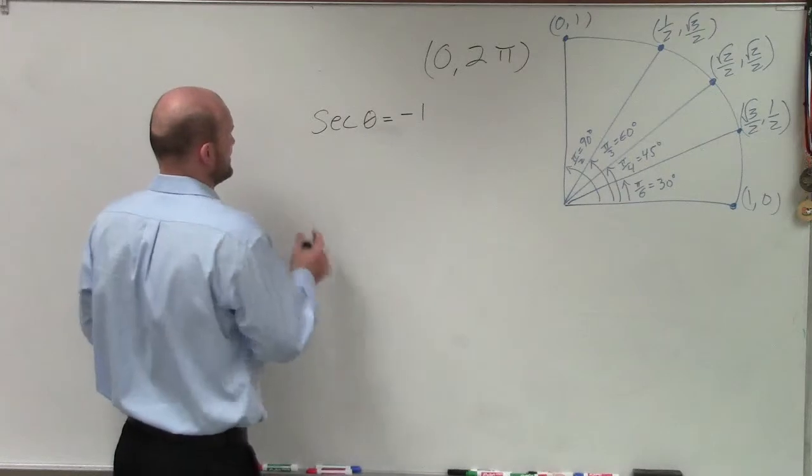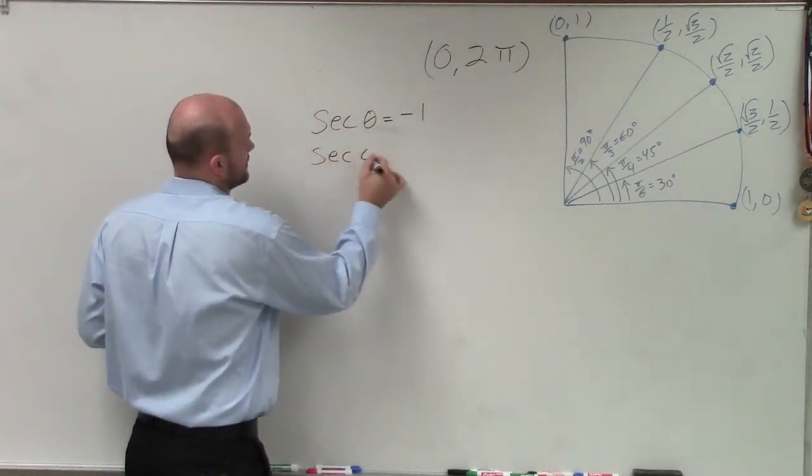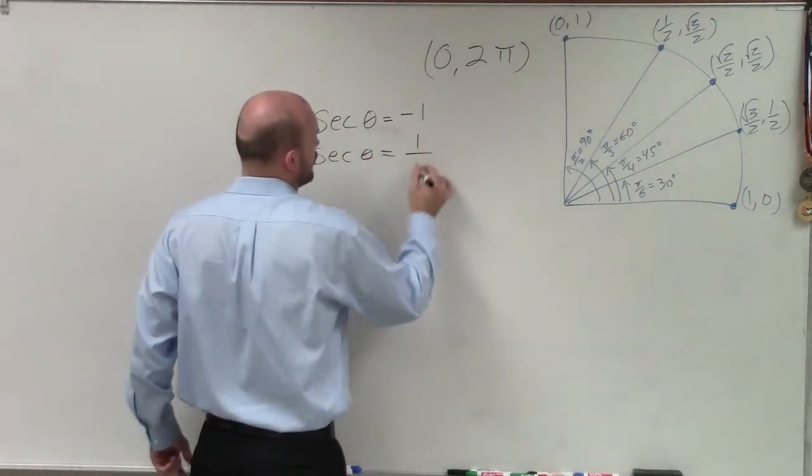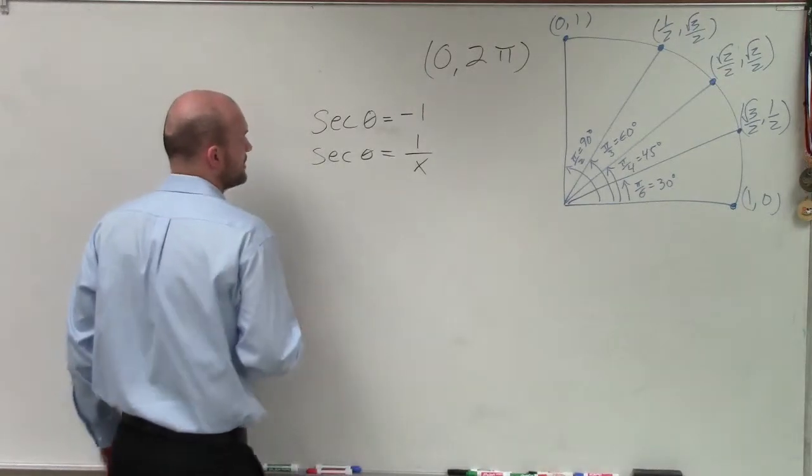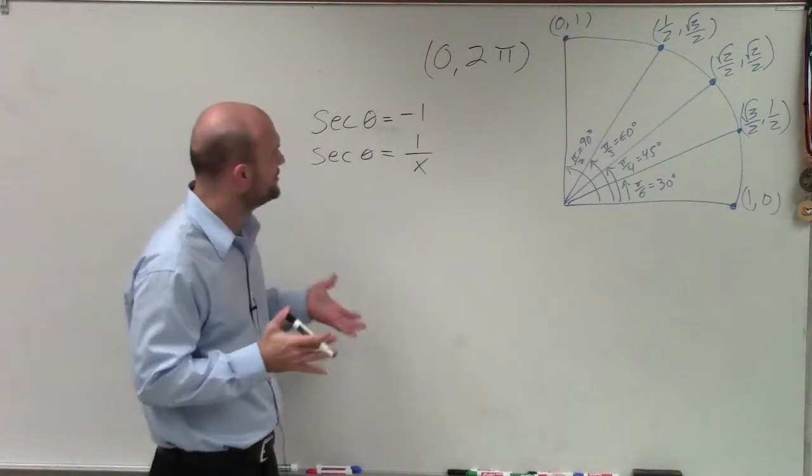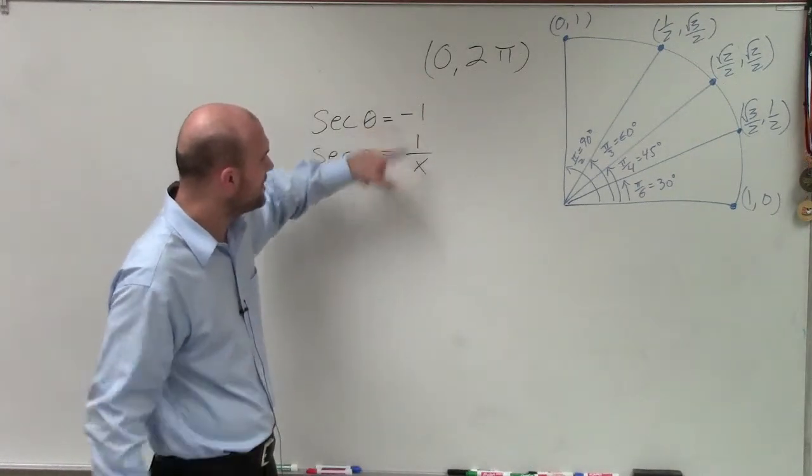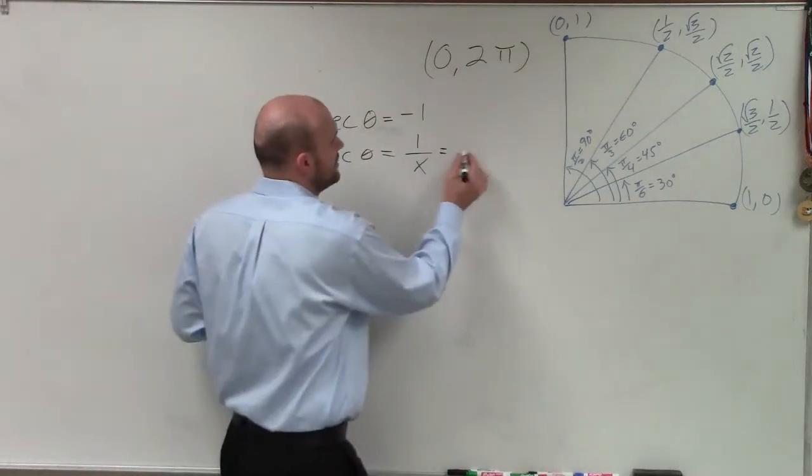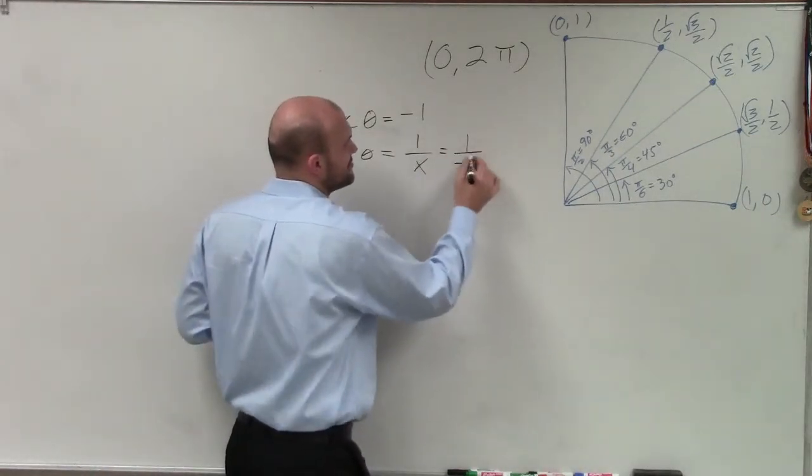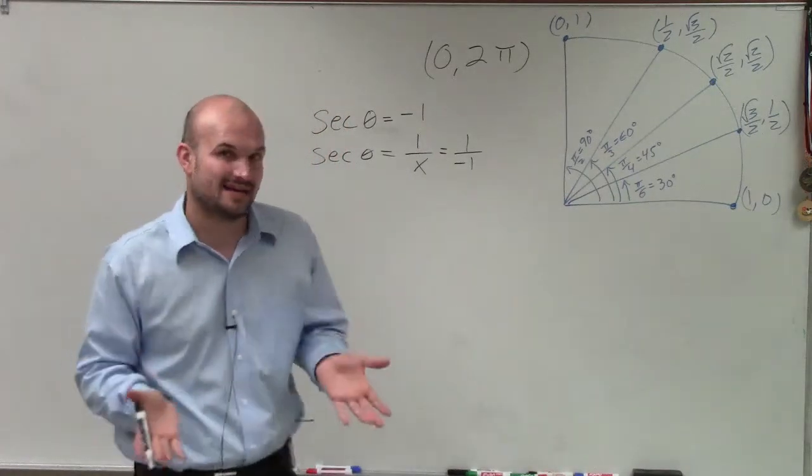So remember, when we're thinking about secant, we know that secant of an angle represents 1 over my x-coordinate, right? So what I really need to do is determine, well, therefore, for 1 divided by what number is going to have to make this negative 1? Well, the only answer that I could really have for x would be when x equals negative 1.